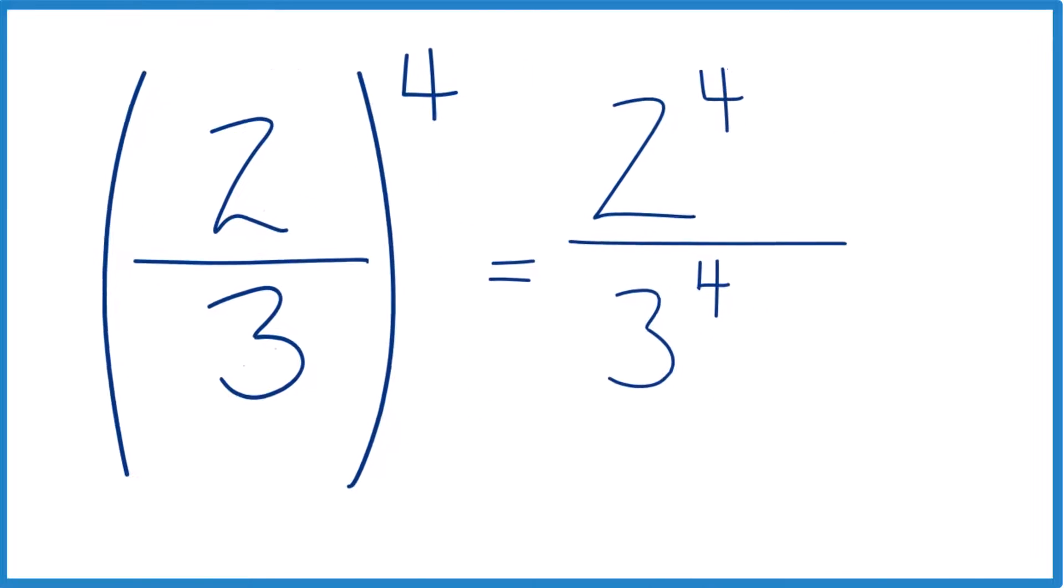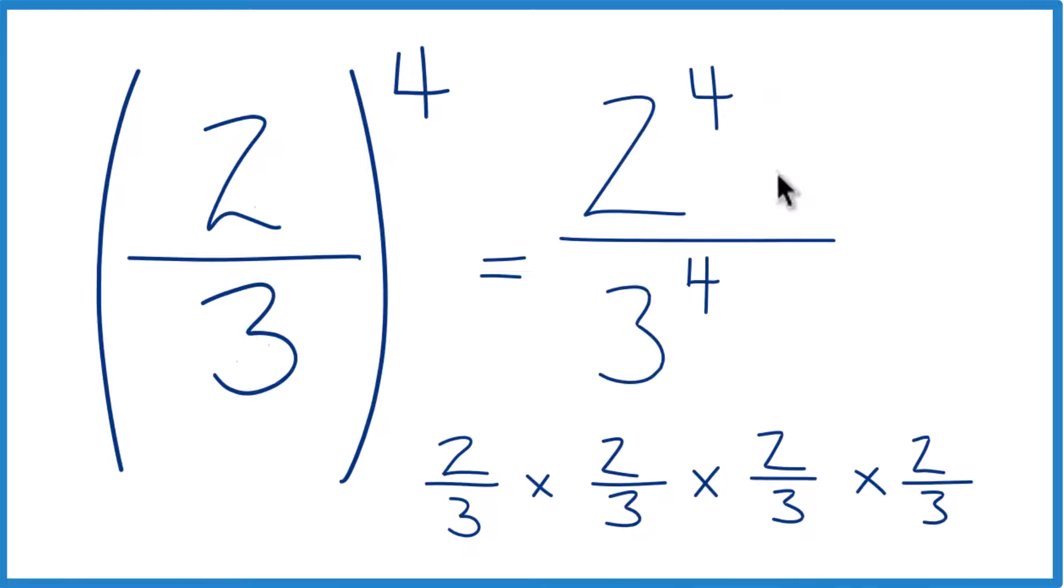And we could write it like this right here. So two times two times two times two, that's two to the fourth, three times three times three times three is three to the fourth. So let's just figure this out.